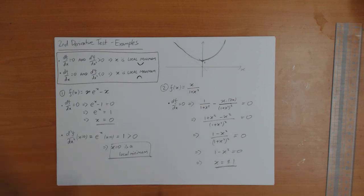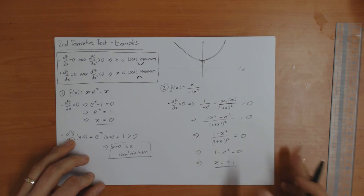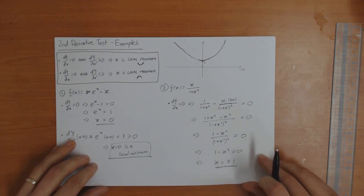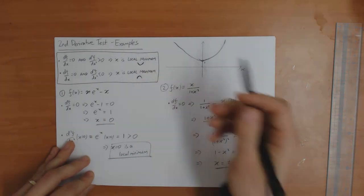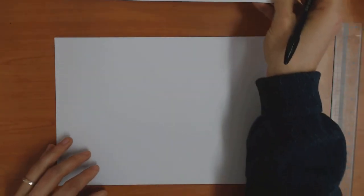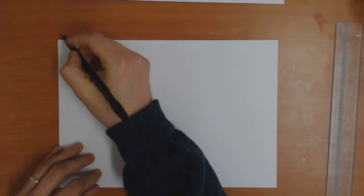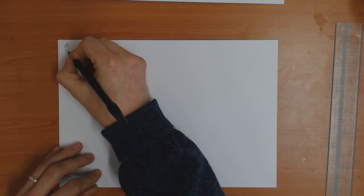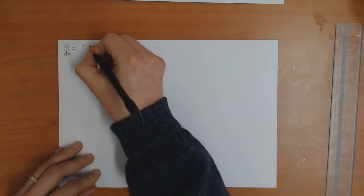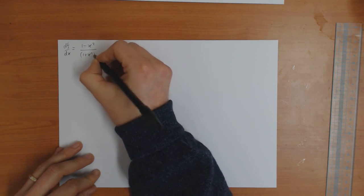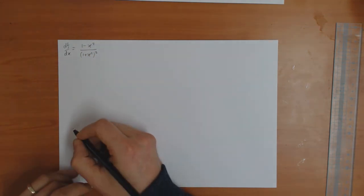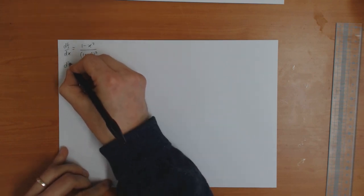So we have two points where the derivative equals zero: x equals plus 1 and x equals minus 1. To find out whether these are maxima or minima, we apply the second derivative test. The first derivative was df/dx = (1 minus x²) divided by (1 plus x²) squared, and now we need to compute the second derivative.